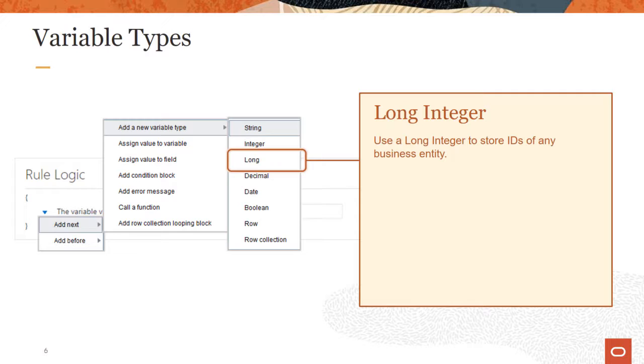Another variable type is long integer which can be used to store ids of any business entities such as job, position, salary basis, and so on. When setting up this variable you may need to use a transformation function.